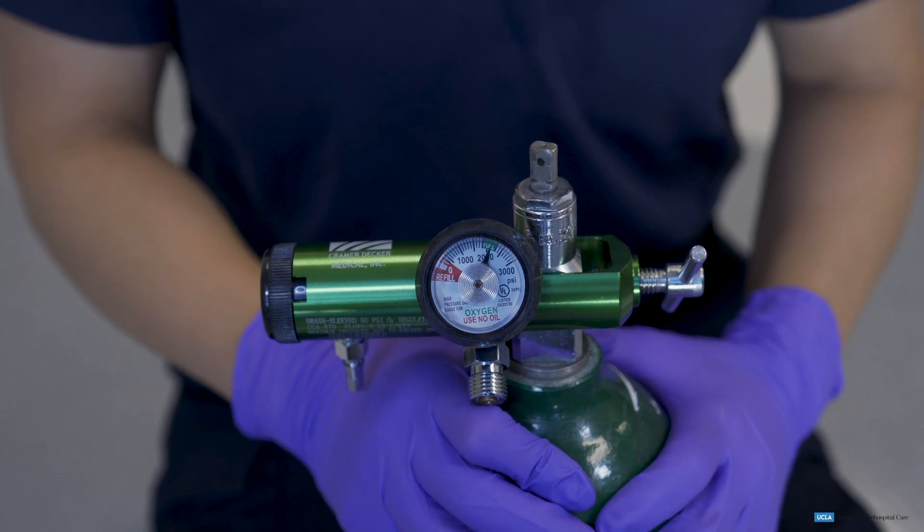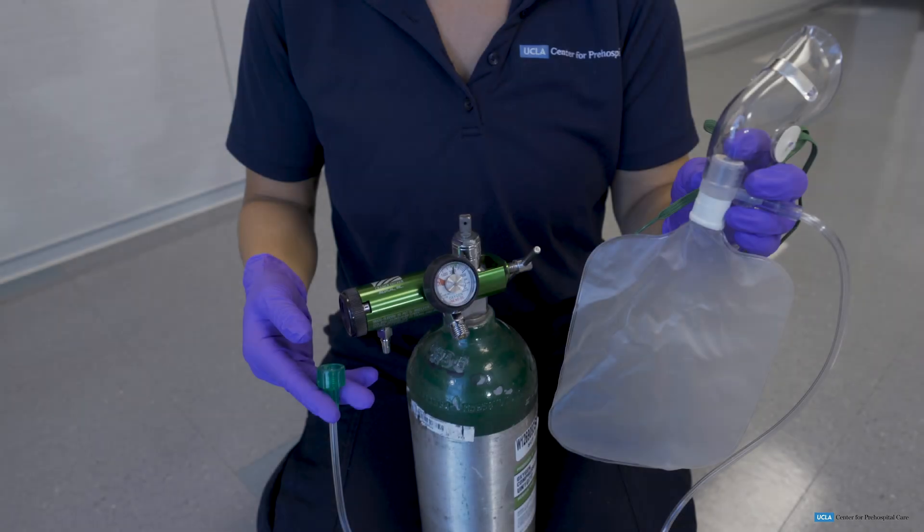Next, the EMT will then listen and feel for any leaks around the regulator. Now that the EMT has assembled the oxygen tank and regulator, ensured adequate pressure, and checked for leaks, the EMT can apply the oxygen delivery device.